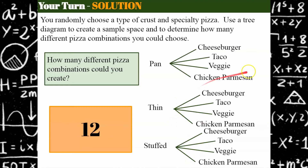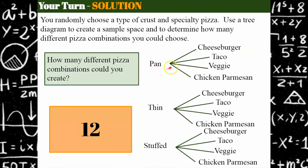Now a tree diagram could get really complicated — I could have added the kind of cheese you wanted, and each one of these could have branched off from the specialty type of pizza. You can see that a tree diagram could get very confusing and very messy very quickly. So typically a tree diagram is good if you have two, sometimes three different choices. When you start getting into more choices, a tree diagram becomes very confusing and I'm going to show you a better way to calculate your sample space.